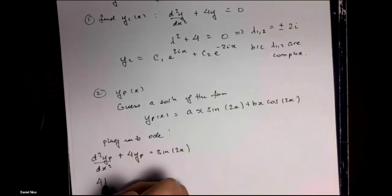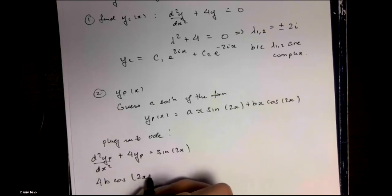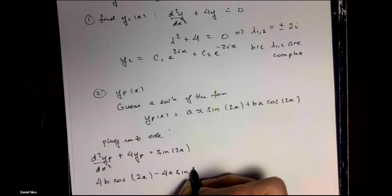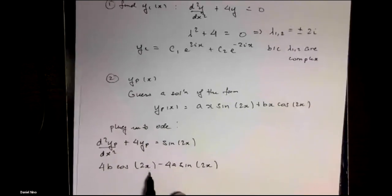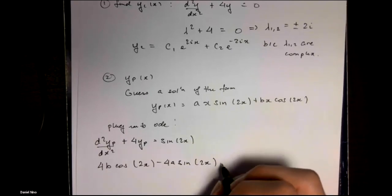When you carry this out, you get this on the left-hand side: 4b cos 2x minus 4a sine 2x.